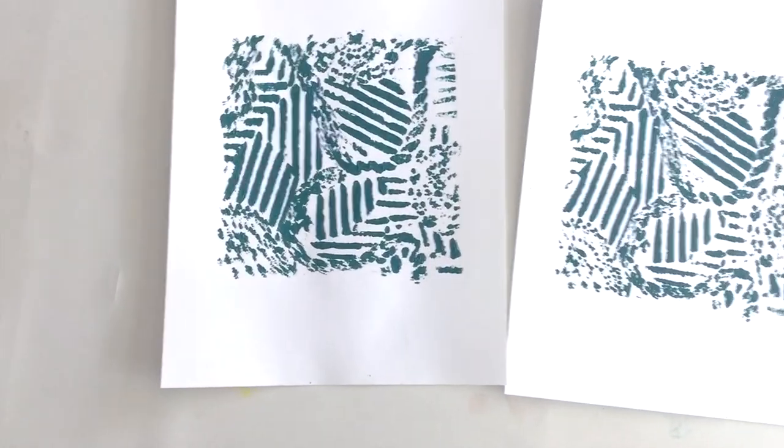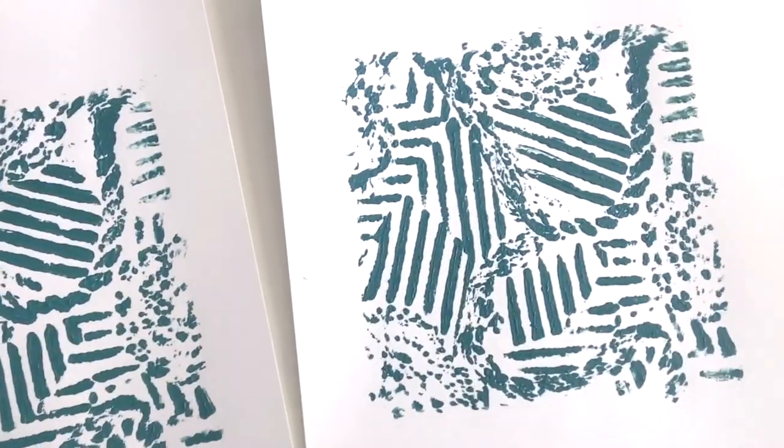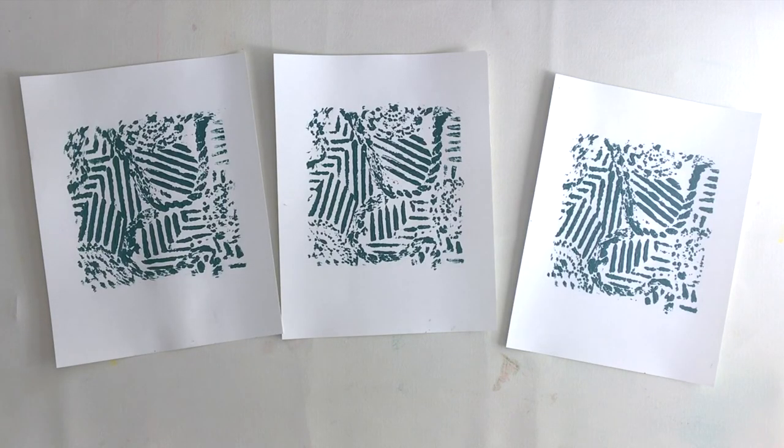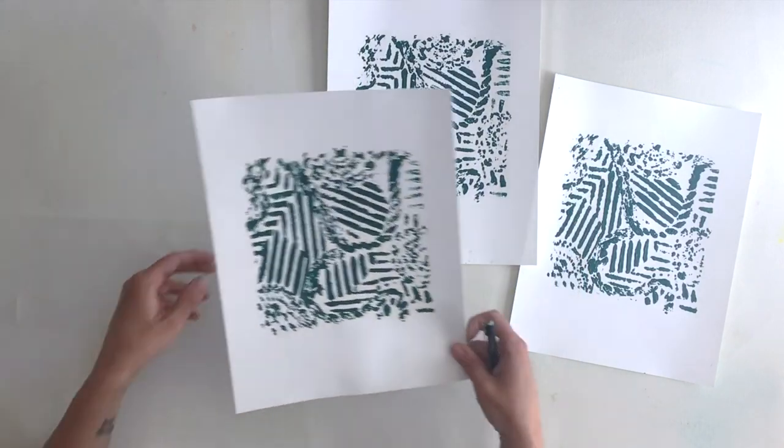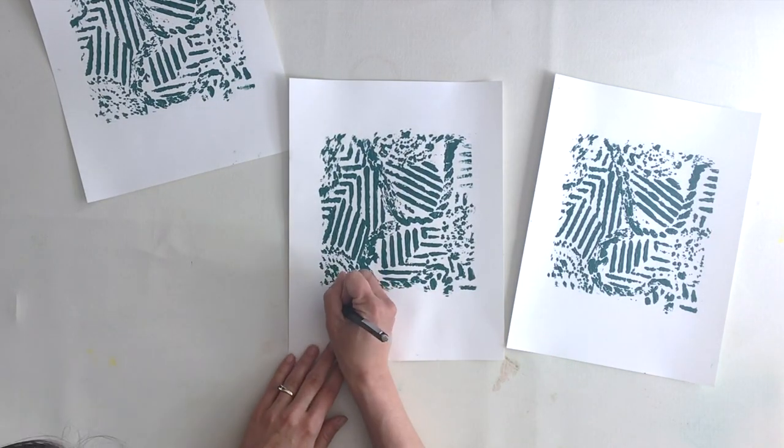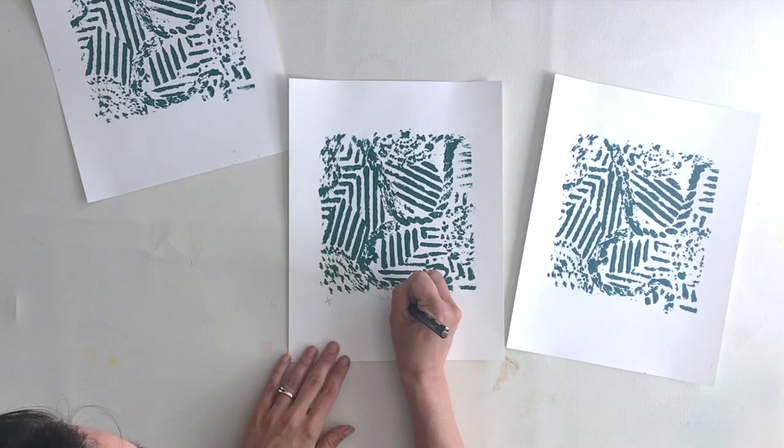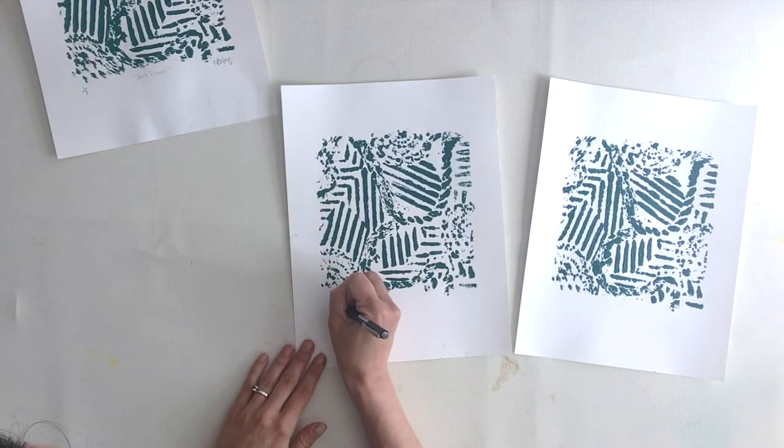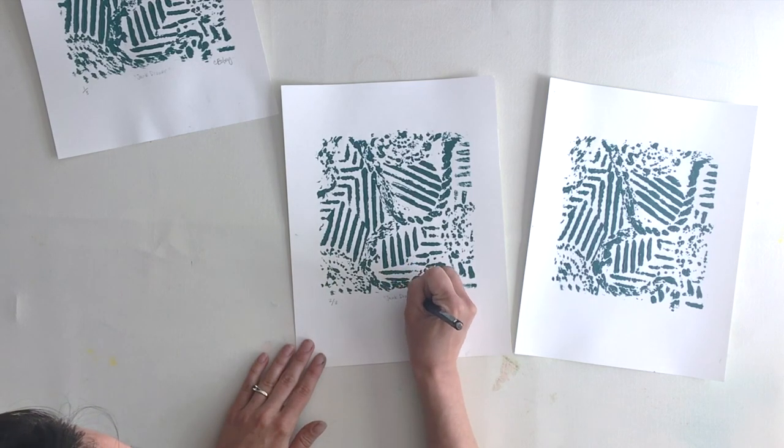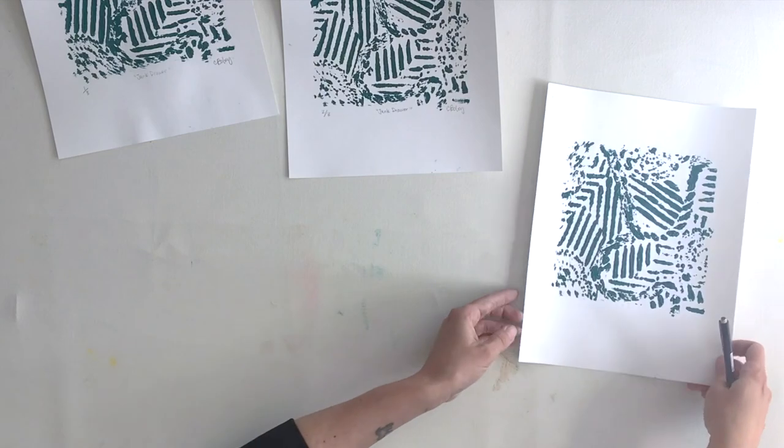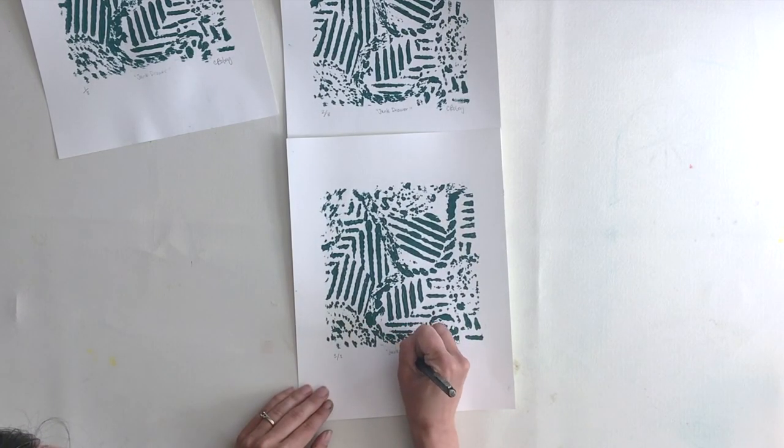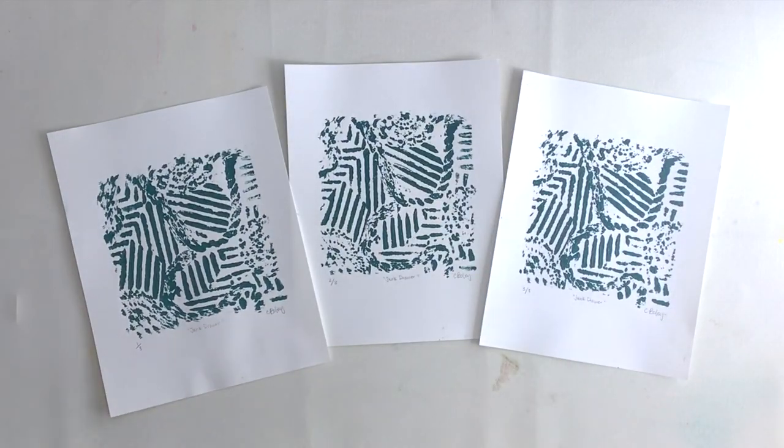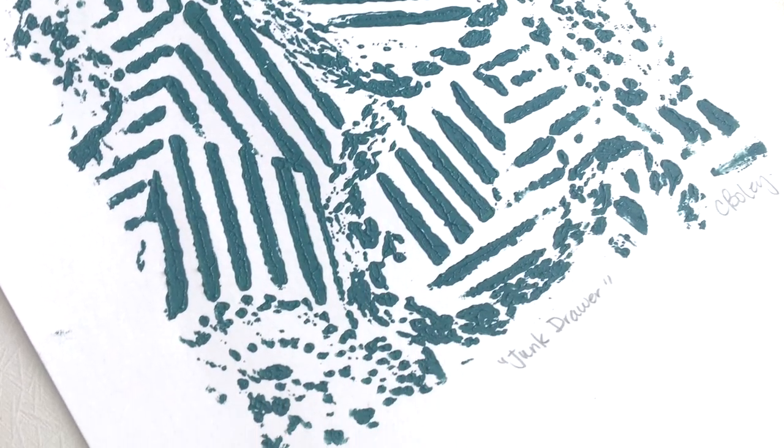I've now pulled three pretty consistent prints, so I'm going to edition them. I do have some smudges, but they're not super noticeable. In the bottom left corner of the print, I will write one out of three, or one over three. I will write the title in the middle, and my signature on the right. I'll then repeat this process for all three prints. And that's the basics of a cardboard calligraph. I hope you learned something and enjoyed the video.